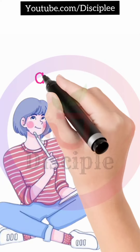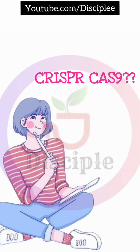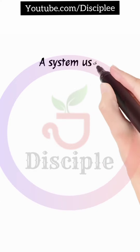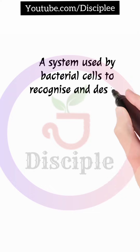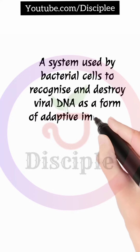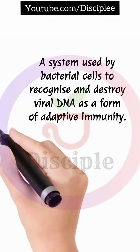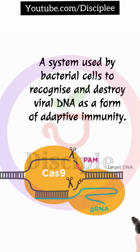Hi everyone, you must have come across this term called CRISPR-Cas9. What is CRISPR-Cas9? CRISPR-Cas9 is a system that is used by bacterial cells to recognize and destroy viral DNA as a form of adaptive immunity.